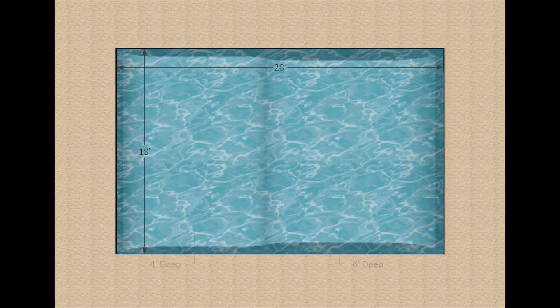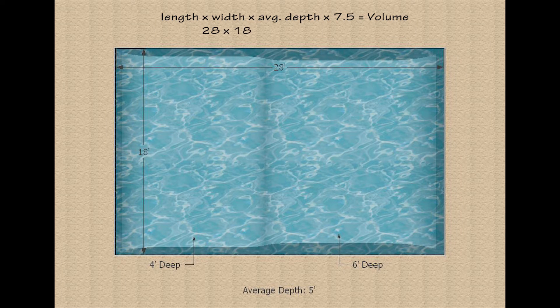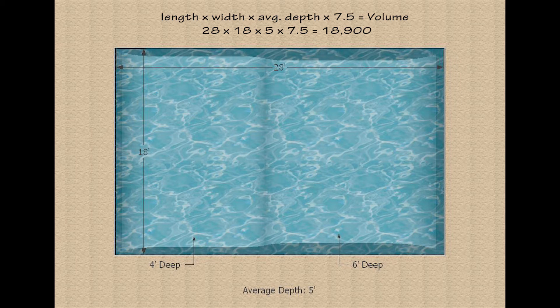For example, if we have a pool that's 28 feet long and 18 feet wide, with a shallow end depth of 4 feet and a deep end depth of 6 feet, the average depth is about 5 feet. If we take 28 and multiply that by 18, by 5, and then by 7.5, we come up with 18,900. Since adding even less than half an inch of water to this size pool would increase that result to over 19,000, we generally round pool volumes. So in this case, we would say we have a 19,000 gallon pool.